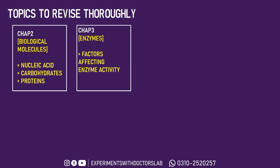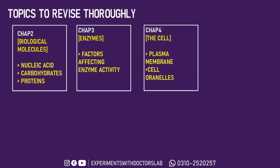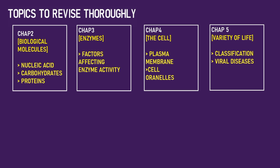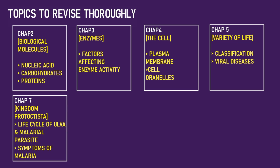Chapter 3, Enzymes — Factors Affecting Enzyme Activity. In chapter 4, the Cell — the plasma membrane and all the cytoplasmic organelles: mitochondria, endoplasmic reticulum, ribosome, every organelle. Chapter 5, Variety of Life — Classification of Viruses and the Viral Diseases. Chapter 7, Kingdom Protista — Life Cycle of Ulva and the Life Cycle of the Malarial Parasite.